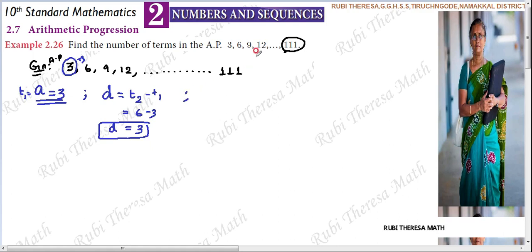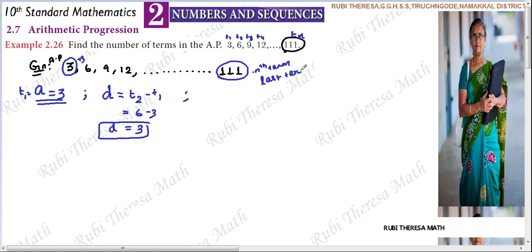So up to now we have A and D. There is one more extra piece of information: the last term. That is the nth term, because we don't know which term it is exactly. We know there is a 1st term, 2nd term, 3rd term, 4th term in order, but in between some terms are missing. So this can be called the nth term, or since it is a finite sequence, you can also call it the last term. So Tn equals l equals 111.